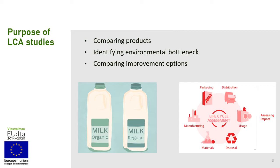Other than that, we can also compare improvement options. For example, we have a production process that uses a certain type of plastic and then we want to use a different type of plastic — we want to replace our PVC with LDPE or with polypropylene — and then we test these two different scenarios and see which one will give higher environmental benefit.